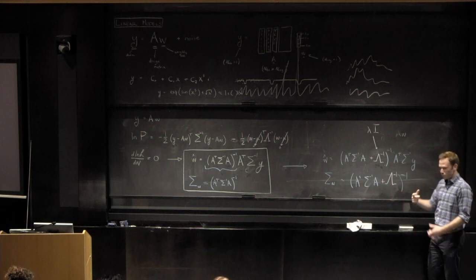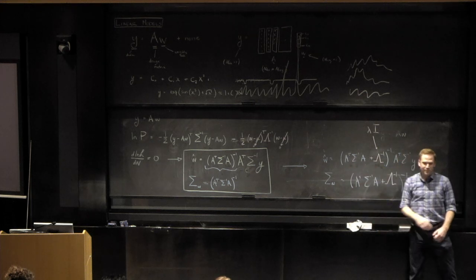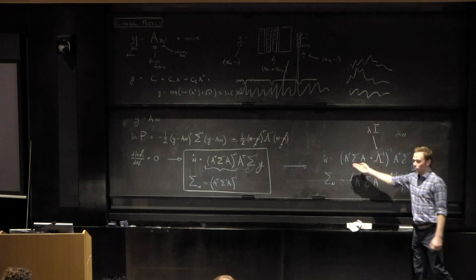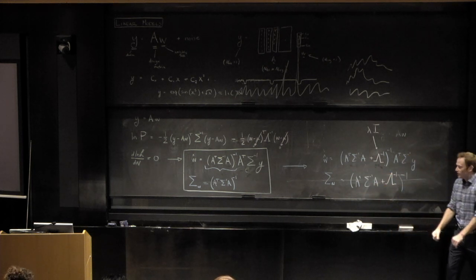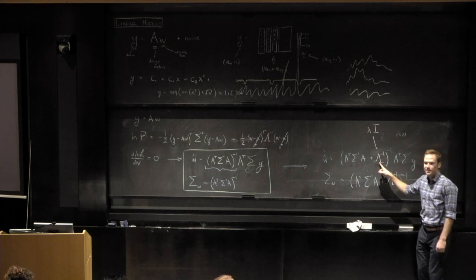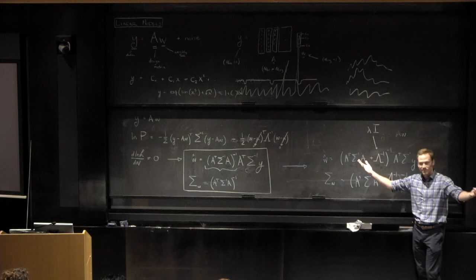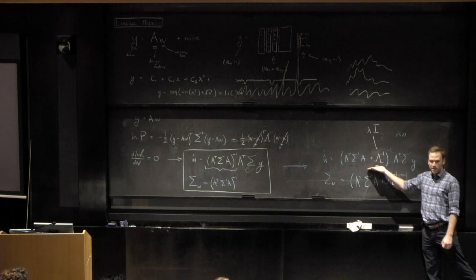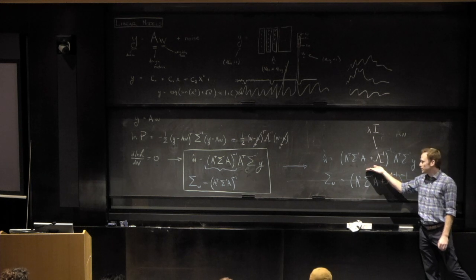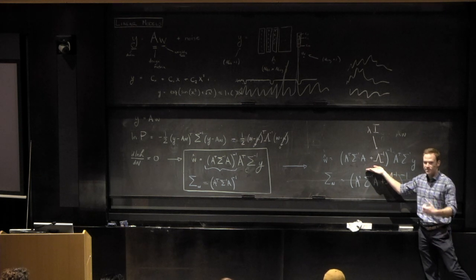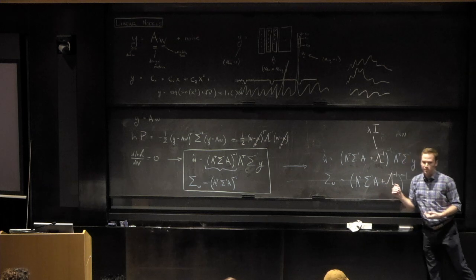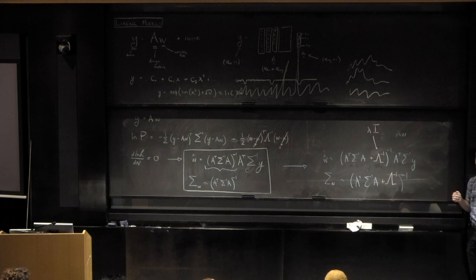Back in the 60s or 70s, when people first inverted large matrices on computers, they realized matrix inversion is numerically unstable. They found that by adding small elements to the diagonal they could suddenly invert them. It wasn't until later they realized this is exactly what you get from a Bayesian perspective — likelihood times prior, through the matrix algebra, gives an estimate for W. This is ridge regression.